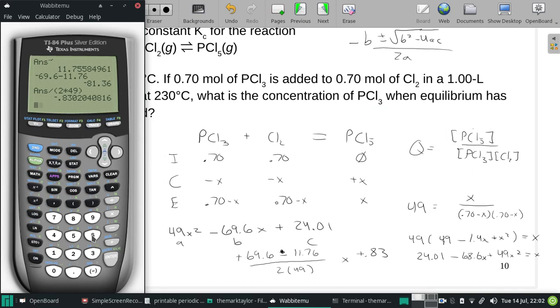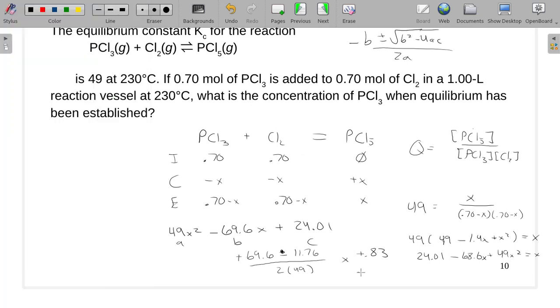All right, so 69.6 minus 11.76 gives me that. Divide this by 2 times 49 and we get a potential root of 0.59. And that will work here. So our correct answer for the PCL3 is going to be 0.70 minus that 0.59.